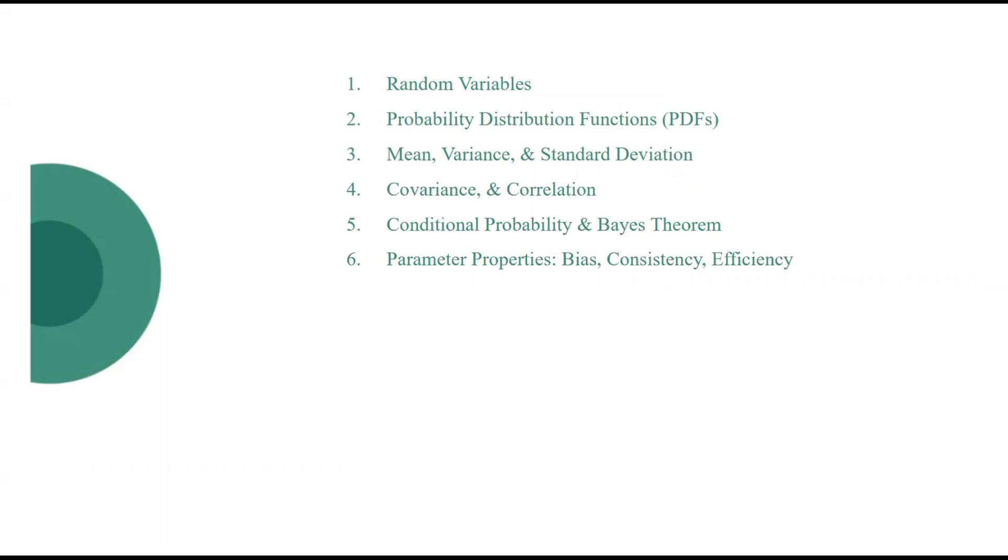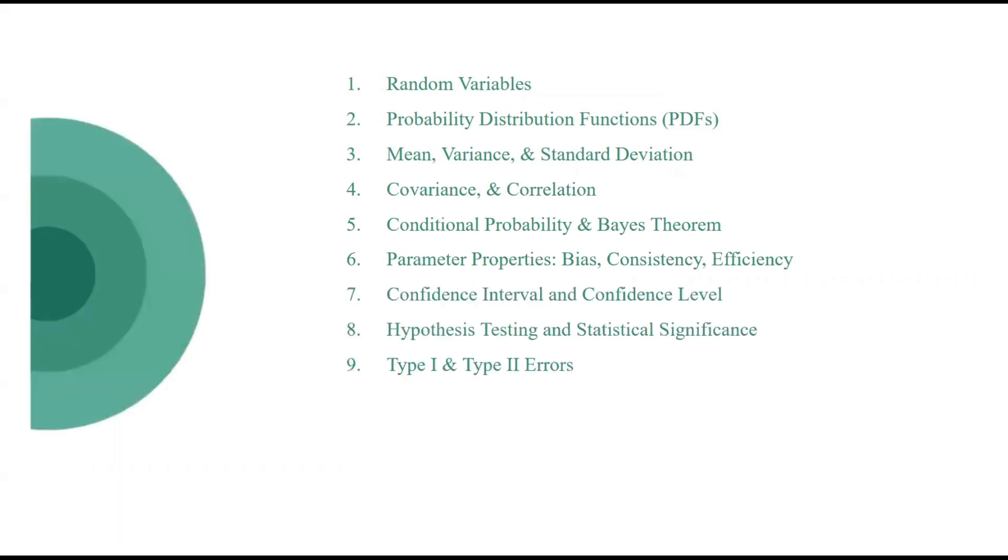We will look into the parameter properties, which are very important for the topic of linear regression. We will then talk about confidence interval and confidence level, a topic commonly used in A-B testing, as well as in many statistical analyses. Hypothesis testing and statistical significance, type 1 error and type 2 errors, which are another set of very important topics we will discuss that you must know for acing your data science interviews.